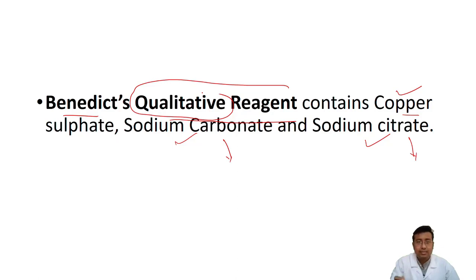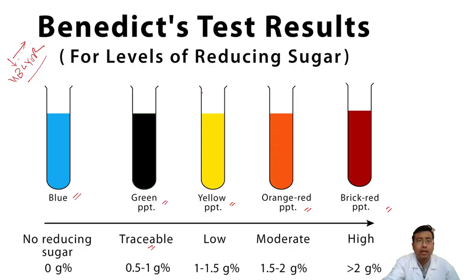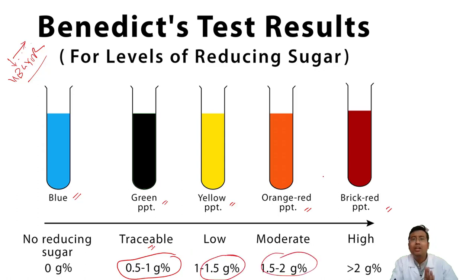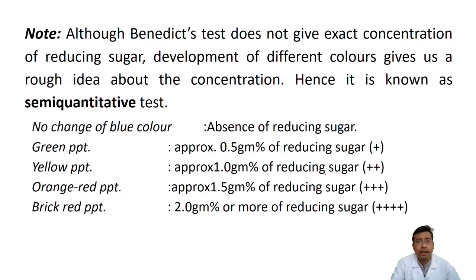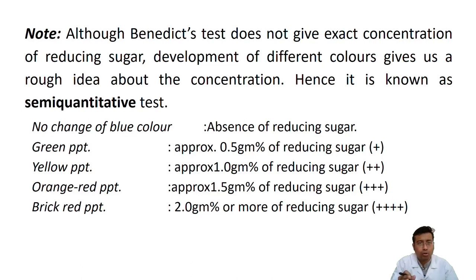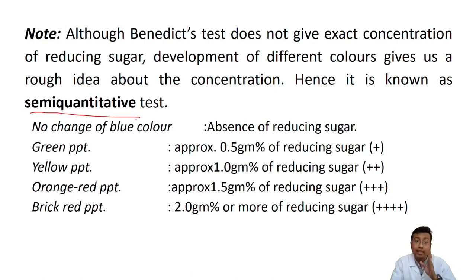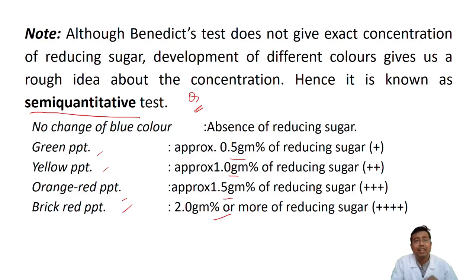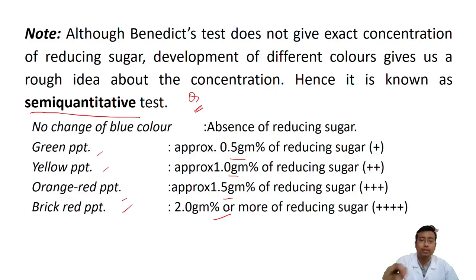This test lies in the middle ground. Based on the amount of reducing substance, we are not getting the exact value, but we get a rough idea. Since we get a rough idea but not the exact concentration, this test behaves partly as qualitative and partly as quantitative. Hence it is known as a semi-quantitative test. This is a unique characteristic and a question that will be asked in your practical viva. Remember: Benedict's test is a semi-quantitative test.